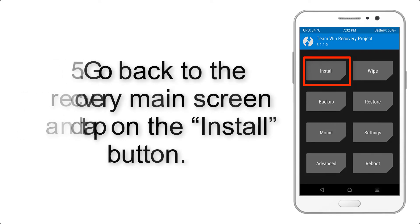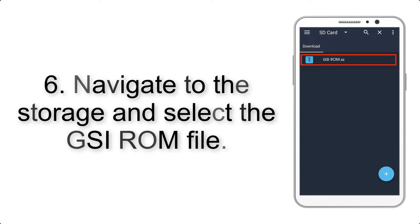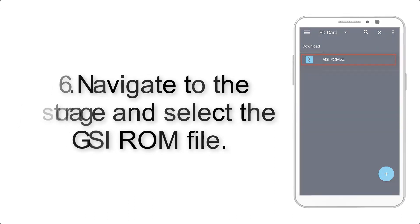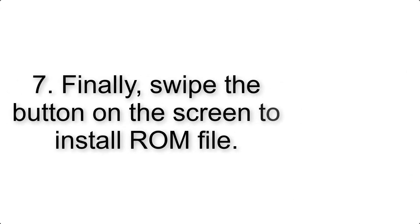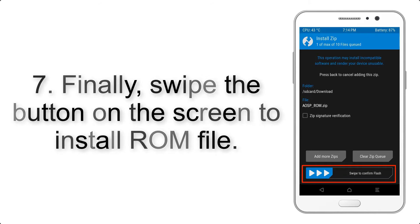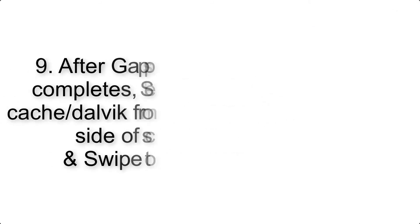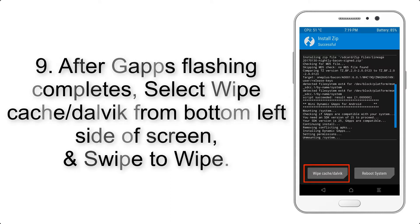Step 5: Go back to the recovery main screen and tap on the Install button. Step 6: Navigate to the storage and select the GSI ROM file. Step 7: Finally, swipe the button on the screen to install the ROM file.